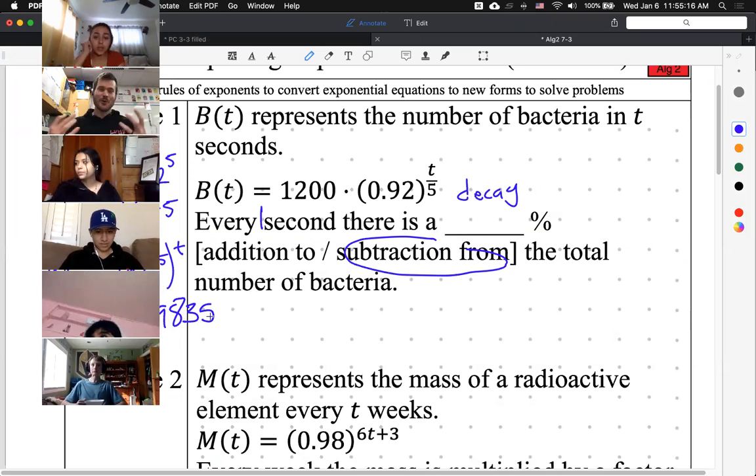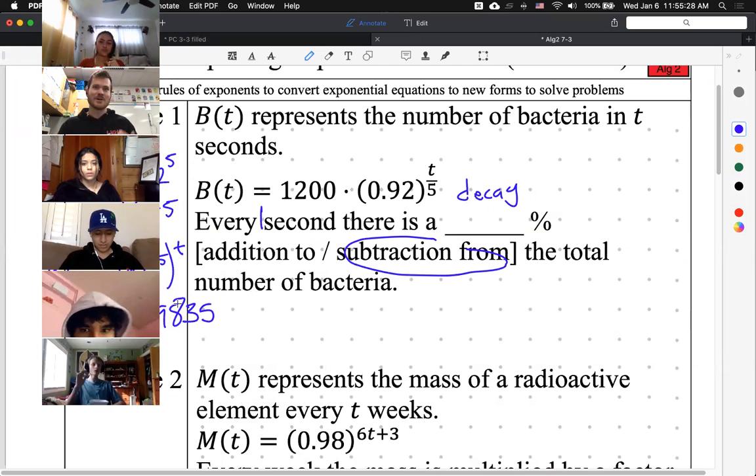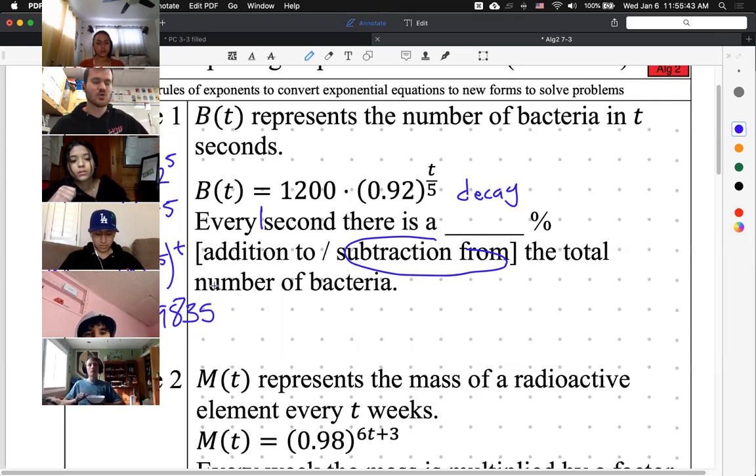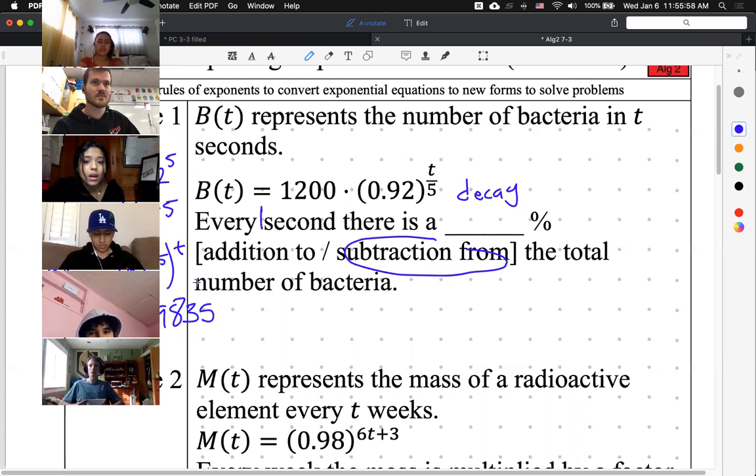So that is our new base. But we still haven't even answered the question yet. The question wasn't asking, what is that new base? It's asking, what is the percent subtraction from? So I need to convert this to a percent. How do I do that? It's the same steps that I talked about all the way back in 7-1 that we reviewed in 7-2 yesterday. And I'm doing again now in 7-3.